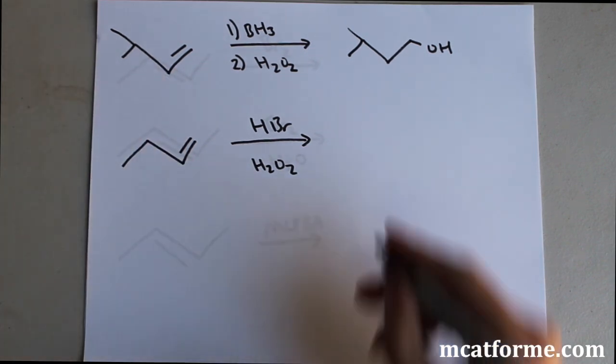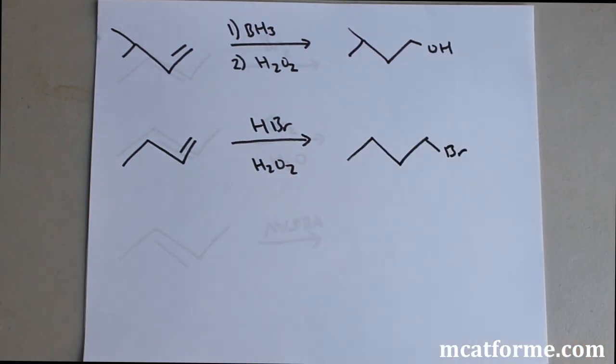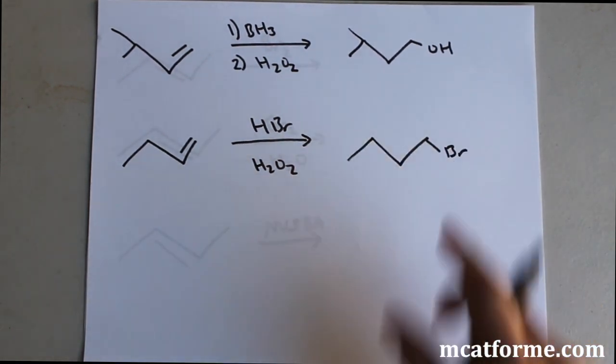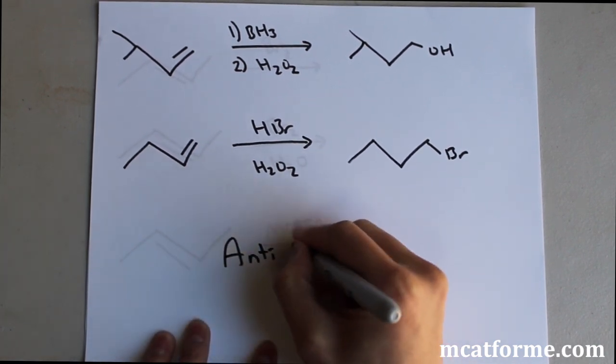Similar to that one, with this peroxide adding it's going to add Br right there. So it's going to be a Br on the less substituted reaction and so these are all anti-Markovnikov.